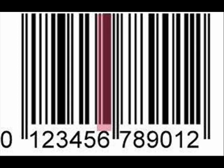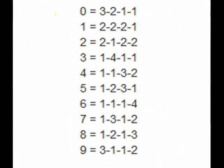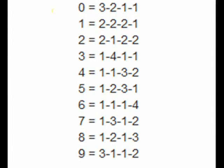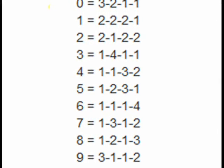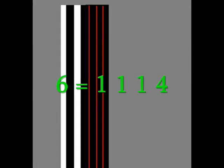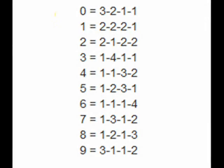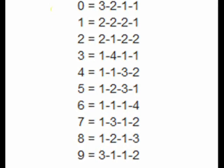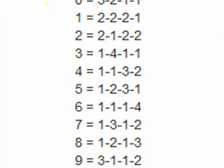This is the pattern a barcode scanner sees when it looks at the number 6. Every number in the UPC code is represented by four bar-space events. The code reading machine recognizes a 6 as a single bar, single space, single bar, followed by four spaces — a pattern of 1-1-1-4. The protocol for decoding all UPC numbers is based on this 4-event pattern, each one unique for every number.